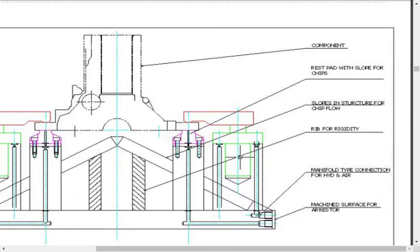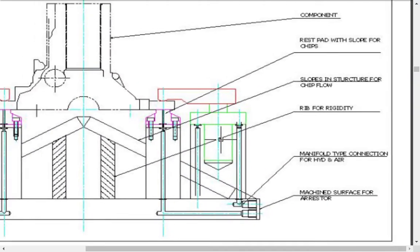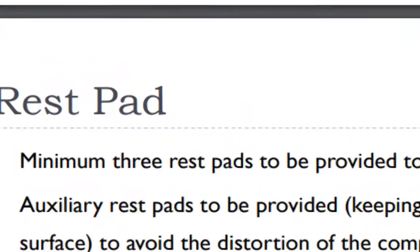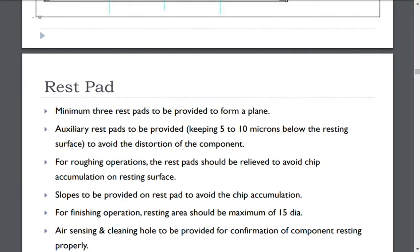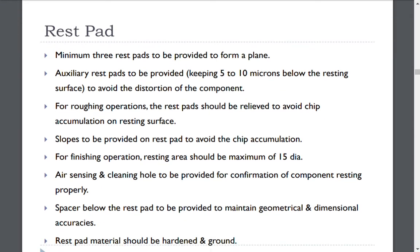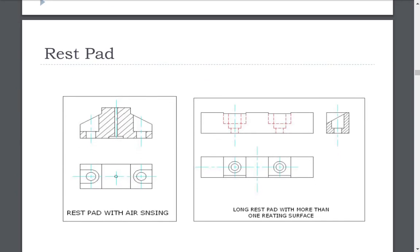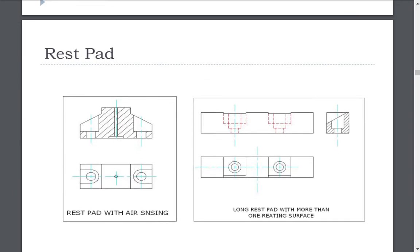The second most important element of fixture is rest pad. There should be minimum three rest pads to be provided to form a plane. Auxiliary rest pads to be provided, keeping 5 to 10 microns below the resting surface to avoid the distortion of the component.